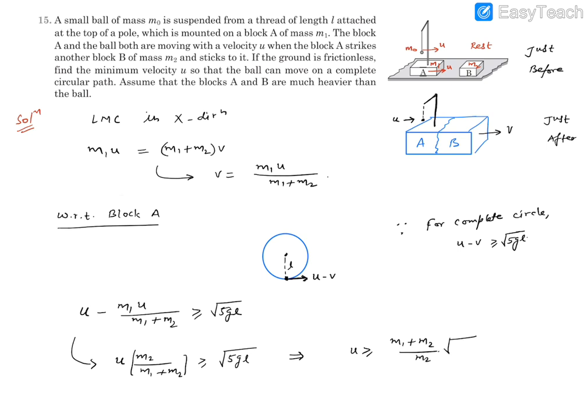Now it is asking for the minimum value of u, so minimum will occur when there is going to be equality, and this has been given as an expression or range, so that will become our final answer. Okay, so that's how we can solve it. Thank you.